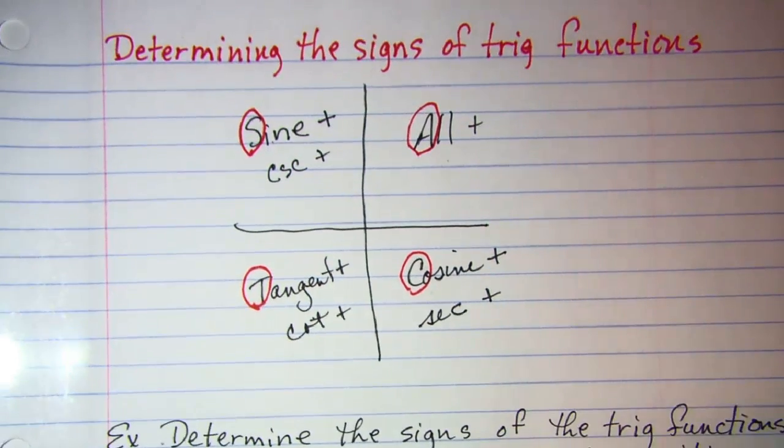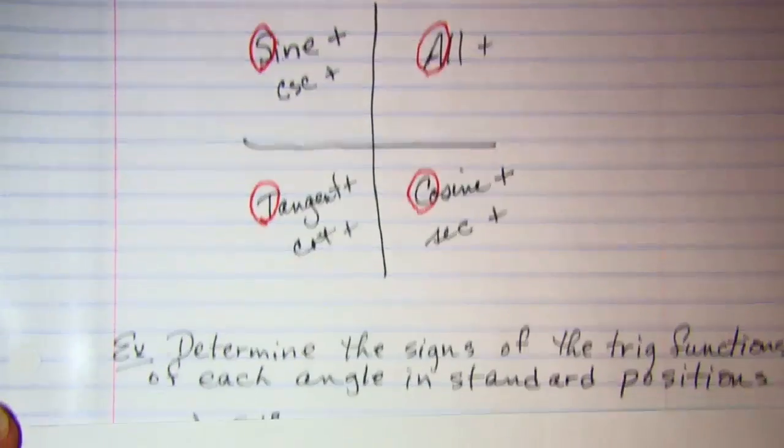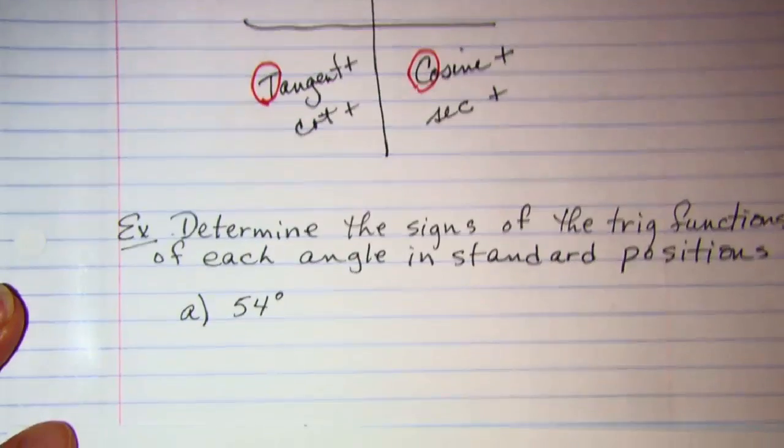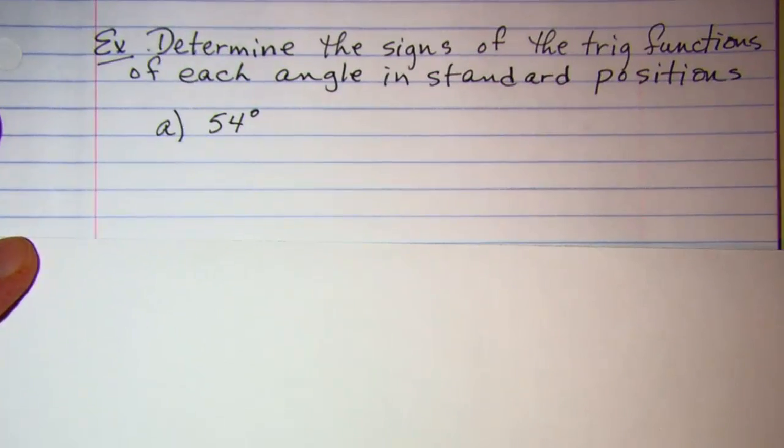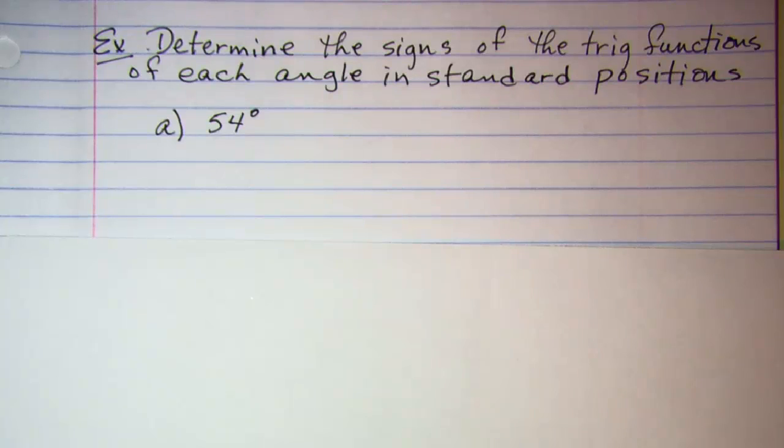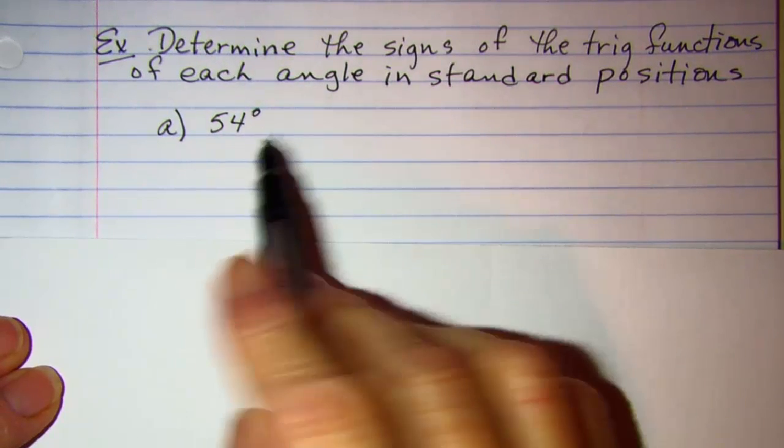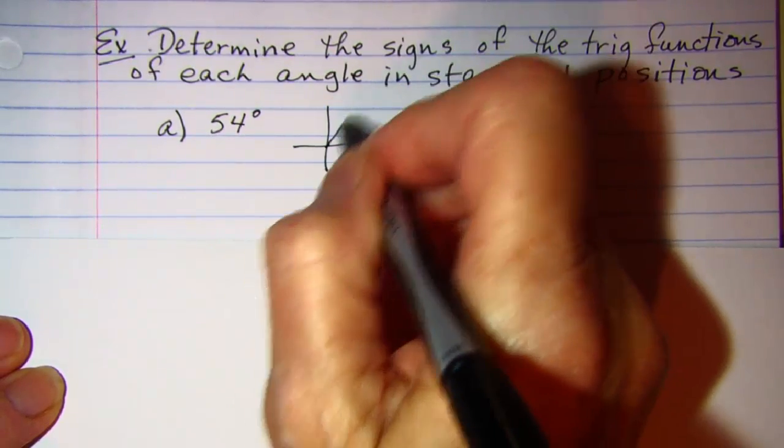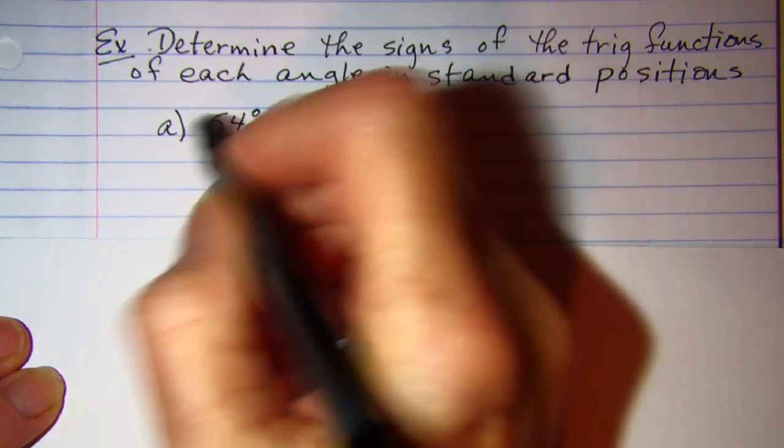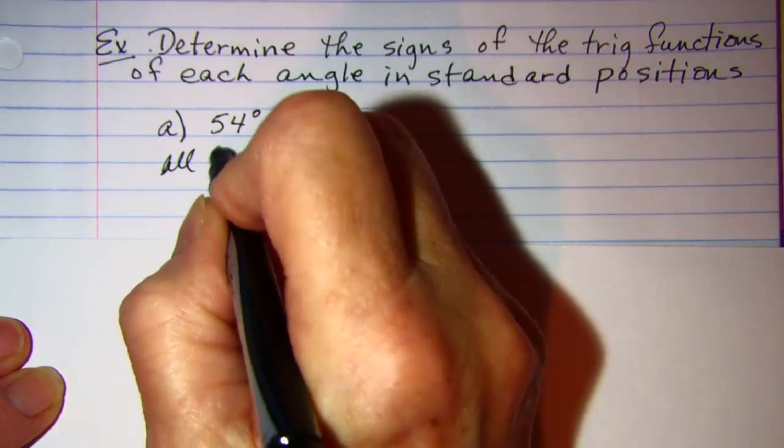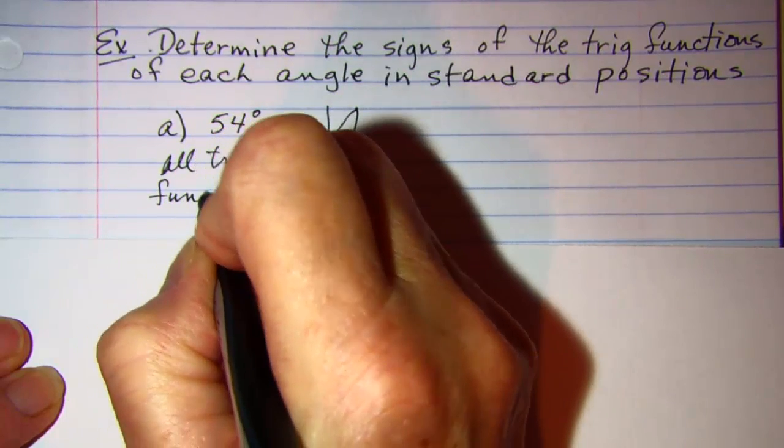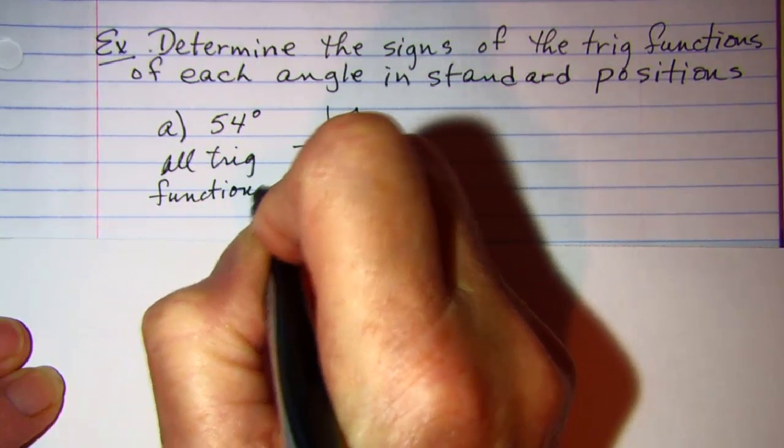All right, let's do a couple of problems. Our question is: determine the signs of the trig functions of each angle in standard position. 54° is in quadrant one, so all trig functions are positive.